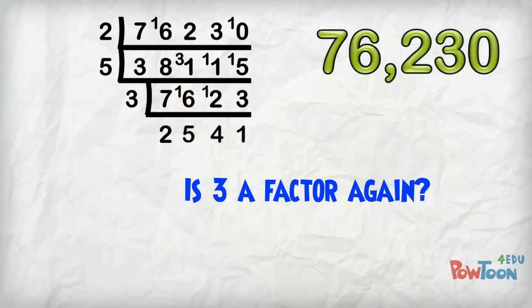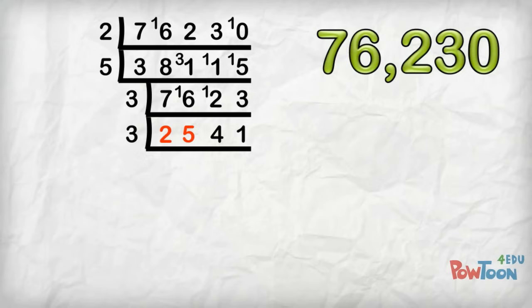Is 3 a factor again? Well, 5 and 4 is 9, plus 1 is 10, plus 2 is 12. Yes, we can use 3! 3's into 25, 8. 3's are 24, remainder 1. 3's into 14, 4. 3's are 12, remainder 2. 3's into 21, 7. 3's are 21.